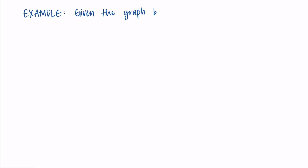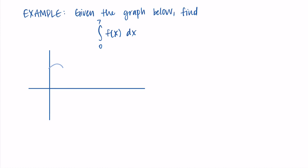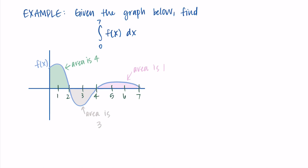Let's say I give you a graph and we want to find the integral from 0 to 7 of f of x dx. I'm going to draw some shapes with some different areas. The first area — drawn here in green — is 4. The area in the middle, the gray area, is 3. And then the last area, the pink one, is 1. This line I've drawn is the curve f of x, and we want to find the integral from 0 to 7.